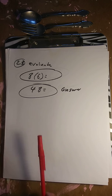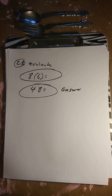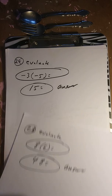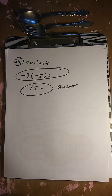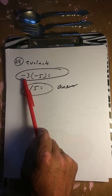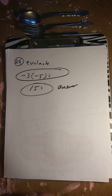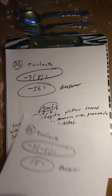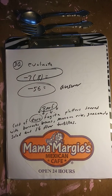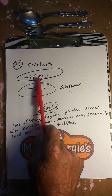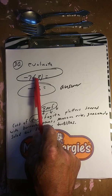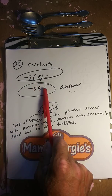Evaluate: the negative absolute value of negative 17 minus 13. Absolute value of negative 17 is 17, minus 13 is 4, so negative 17 and negative 13 together gives negative 30. Next: a positive times a positive is a positive 48. A negative 3 times a negative 5 — negative times negative is a positive 15. A negative times a positive is negative 56.